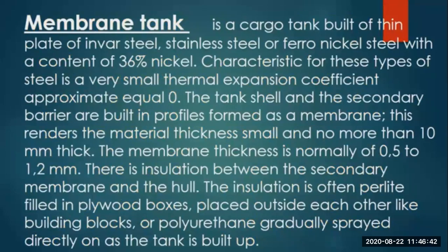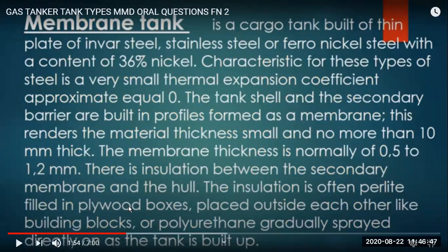Membrane tanks are made of a very thin layer of invar steel, stainless steel, or nickel steel - 36% nickel. Because the layer is very thin, thermal expansion takes place very easily and there are not too many fractures. The material is chosen so that it's hard enough that it cannot crack, even at thin layers. The tank shell and secondary barrier are built in profiles formed as a membrane, rendering the material thickness small - no more than 10 mm thick.